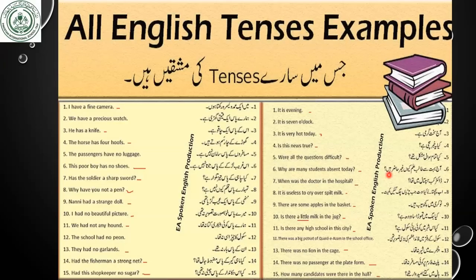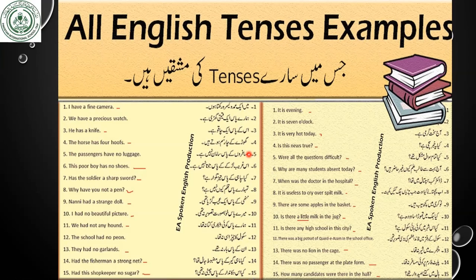Here, dear students, we have another page with all English tense examples. We have many Urdu sentences and their translations. Like 'I have a fine camera,' 'We have a precious watch,' 'He has a knife.' We may not have such individual sentences in the English paper, but we will have a group of sentences — like a paragraph — and you have to translate it.